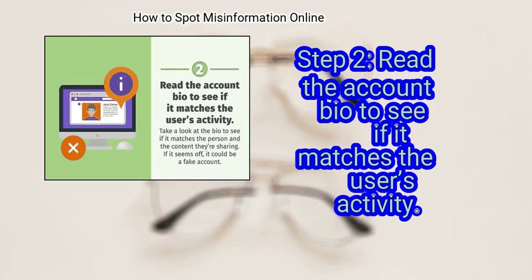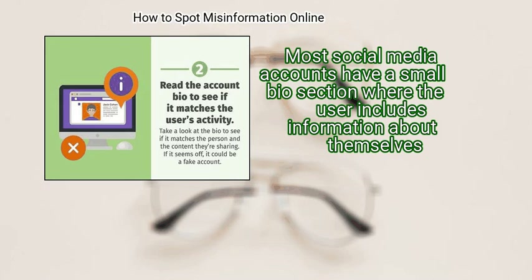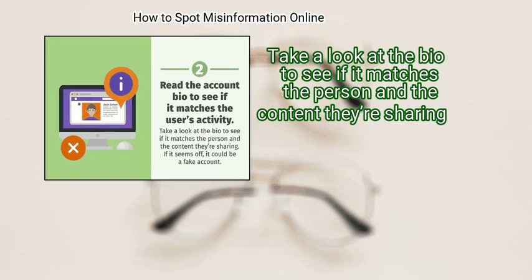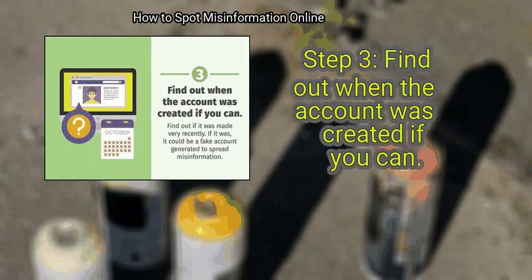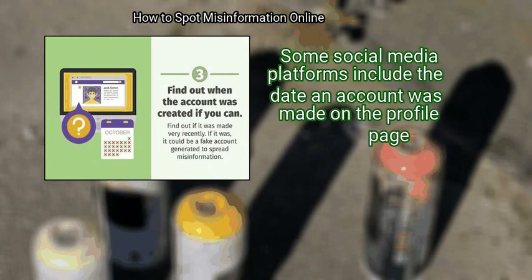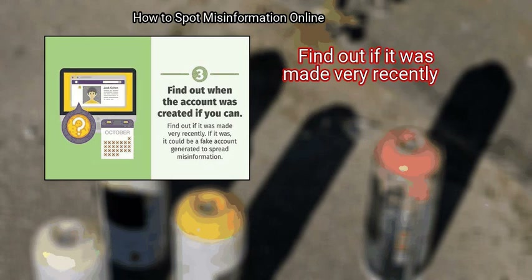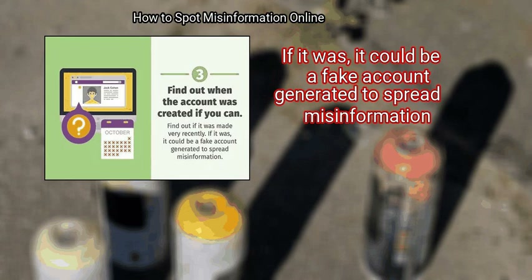Step 2: Read the account bio to see if it matches the user's activity. Most social media accounts have a small bio section where the user includes information about themselves. Take a look at the bio to see if it matches the person and the content they're sharing. If it seems off, it could be a fake account. Step 3: Find out when the account was created, if you can. Some social media platforms include the date an account was made on the profile page. Find out if it was made very recently, as it could be a fake account generated to spread misinformation.